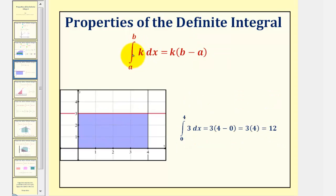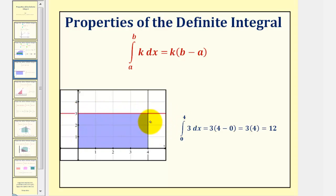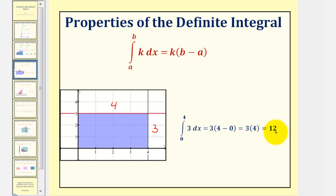Next, if k is a constant, the integral of k from a to b is equal to k times the quantity b minus a. As an example, if we integrate three from zero to four, k is three, so this is equal to three times b minus a, which would be four minus zero, giving us three times four, which equals 12. If we graph the integrand function f of x equals three, it's a horizontal line, and the area below the function and above the x-axis over zero to four is a rectangle. The value of k gives us the length of the rectangle, and b minus a gives us the width, which would be four, giving a result of three times four, or 12.